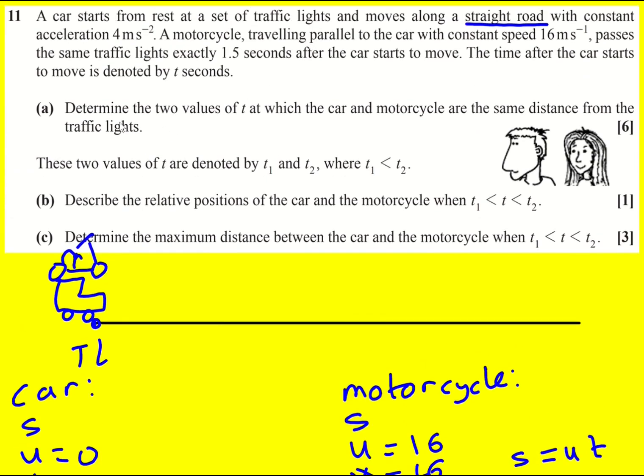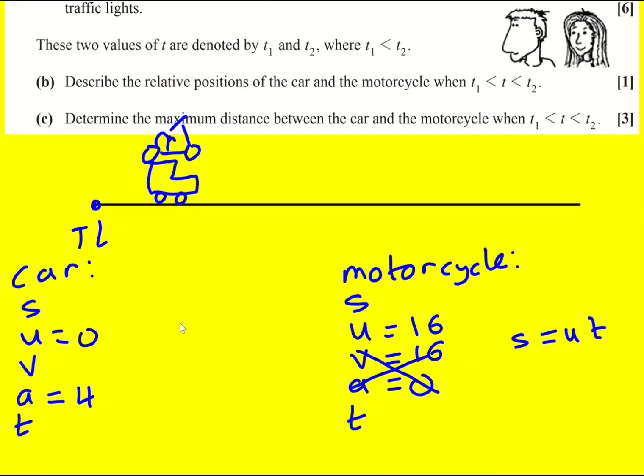For example, after 4 seconds it's going to be going 16 meters per second. It's going to be going the same speed. And then after that it's going to actually be going faster. So eventually the car will overtake. So these are the times we need to look at, and therefore I want to calculate the values of t, where they're the same distance from the traffic lights. Let's call this a distance capital S.